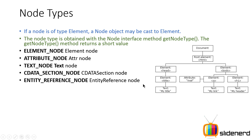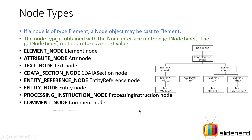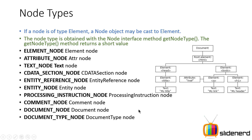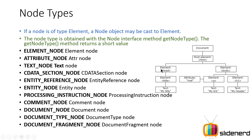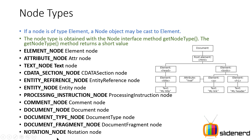getNodeType() returns values for: ELEMENT_NODE, ATTRIBUTE_NODE, TEXT_NODE, CDATA_SECTION_NODE — XML documents sometimes have CDATA sections — ENTITY_REFERENCE, ENTITY_NODE, PROCESSING_INSTRUCTION, COMMENT_NODE, DOCUMENT_NODE, DOCUMENT_TYPE_NODE, DOCUMENT_FRAGMENT_NODE, and NOTATION_NODE. Don't worry about all of these — what you need to remember is ELEMENT_NODE, TEXT_NODE, and ATTRIBUTE_NODE, which are sufficient for most cases.